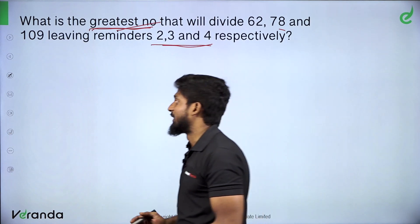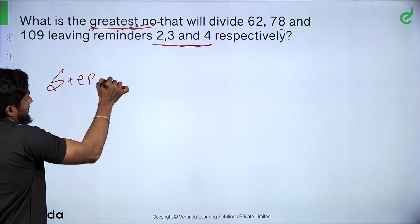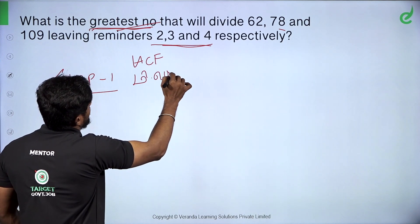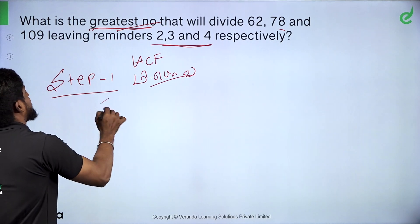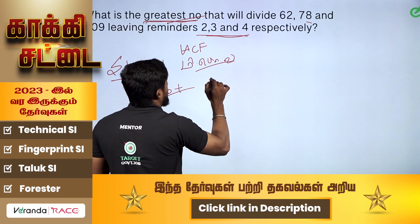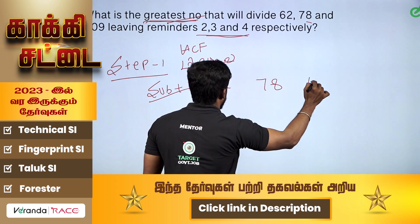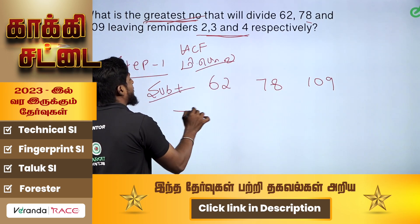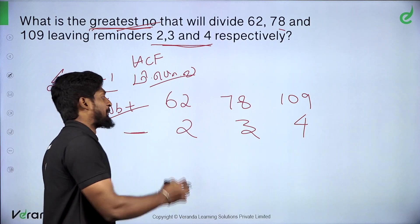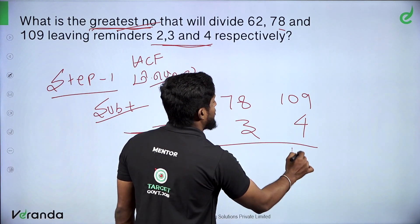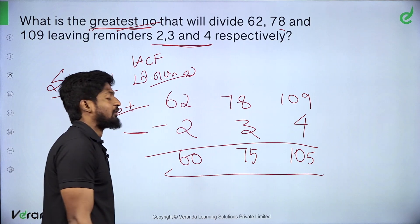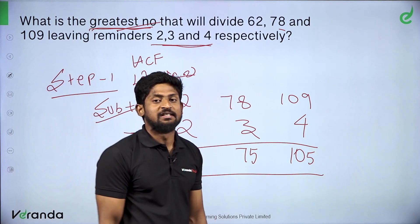This video solves HCF step by step. Step 1: subtract. Given numbers 62, 78, and 109 with remainders 2, 3, and 4 respectively, we subtract the remainders: 78 minus the remainder gives 105 difference, and another gives 25, and another gives 60. These subtracted values guide us to the HCF.